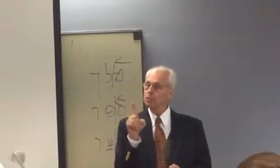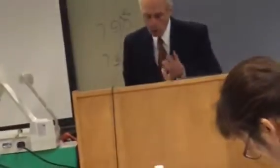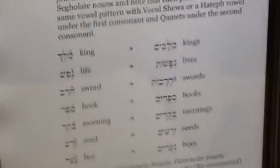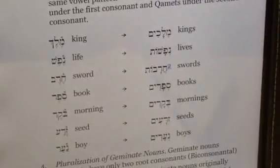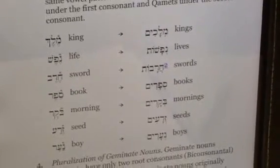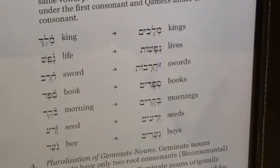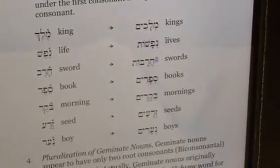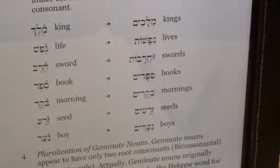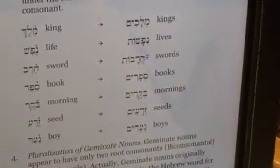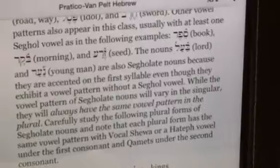Now look, we're going to pluralize all of them for you. I want you to notice the pattern is always the same: m'lakhim — shwa under the mem, qamets under the lamed. N'fashim — there it is again: shwa under the nun, qamets under the pe. Haravot, s'farim, p'karim, ts'ra'im, n'arim. They all form their plural in exactly the same pattern. So pluralization of segolate nouns is, in fact, as easy as no-change pluralization.